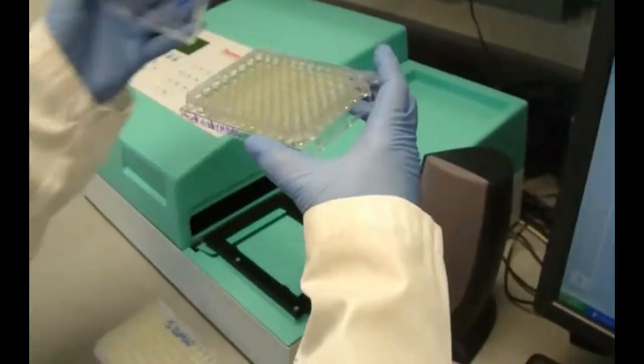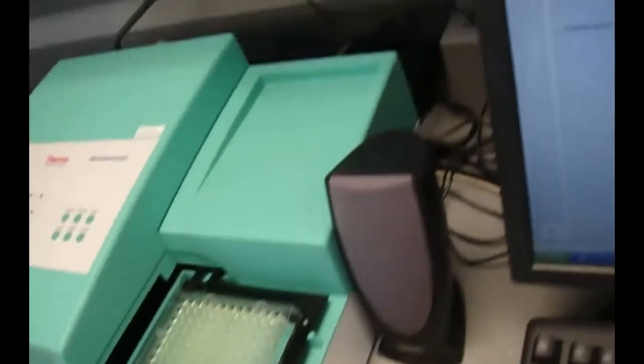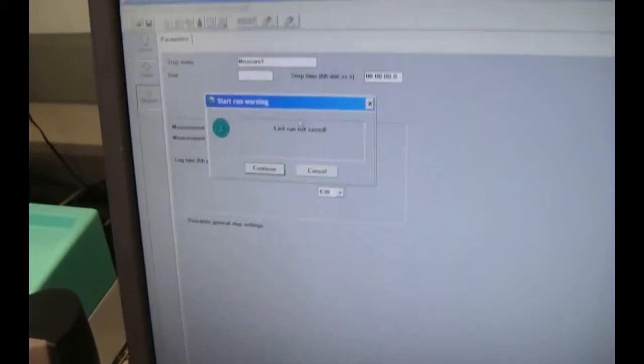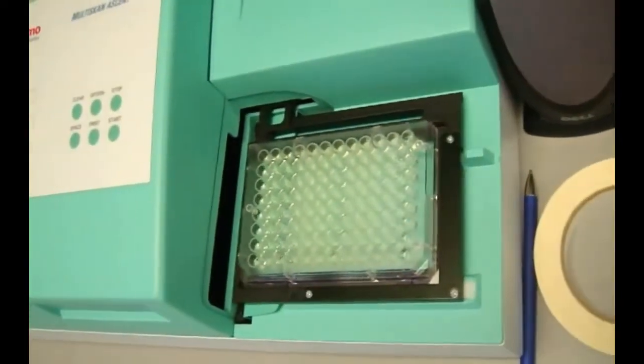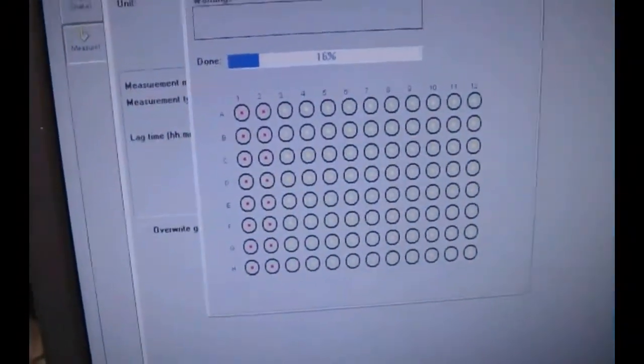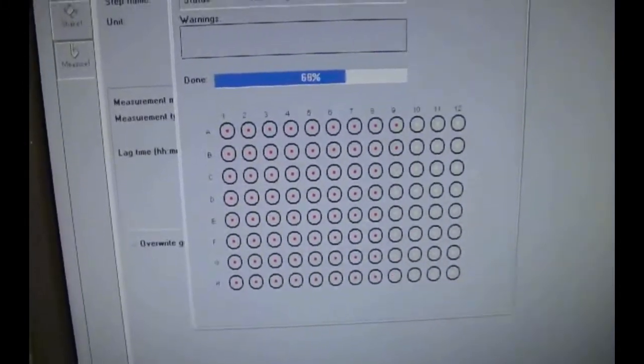To determine the minimum biofilm eradication concentration values, the wells of the recovery plate are visually checked for turbidity. Alternatively, a microtiter plate reader may be used to obtain optical density measurements at 650 nm. The MBEC value is the minimum concentration of antibiotic that inhibits growth of the biofilm as indicated by a well with no turbidity.